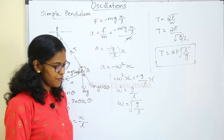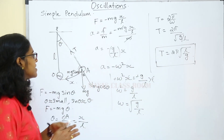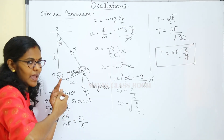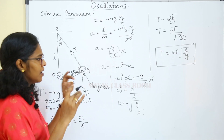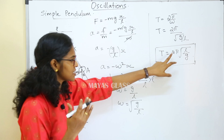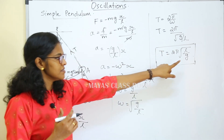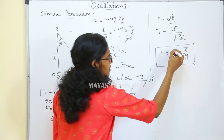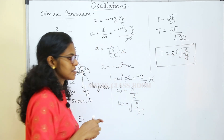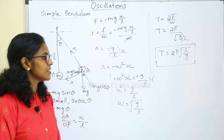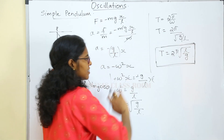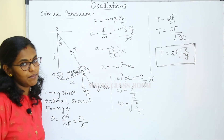The time period depends on the length of the pendulum and acceleration due to gravity. The longer the pendulum, the greater the time period. T is equal to 2pi into root of L by g.